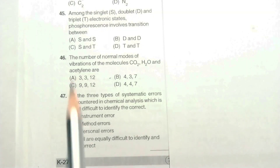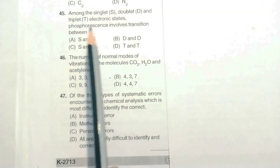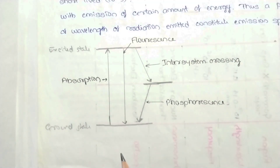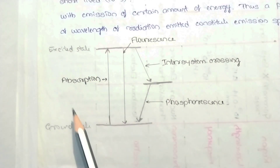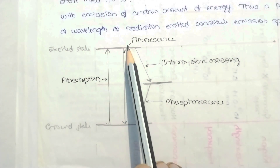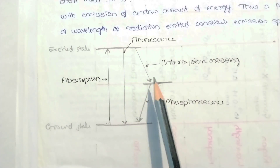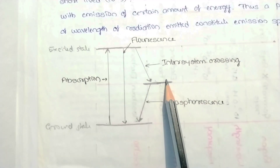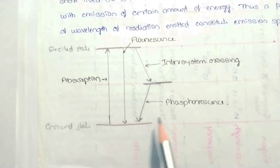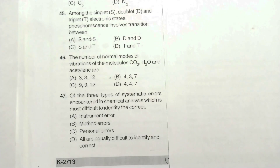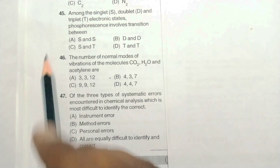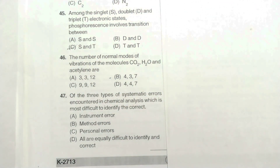The next question: among singlet, doublet, and triplet electronic states, which transition does phosphorescence involve? After absorption, the electron moves from the ground state to an excited state. Emission returns it to the ground state. Inter-system crossing takes it from the excited singlet to the triplet state, and phosphorescence is the transition from the triplet state back to the singlet ground state. Hence option C is correct — phosphorescence involves the transition between singlet and triplet states.